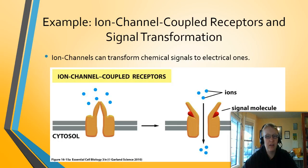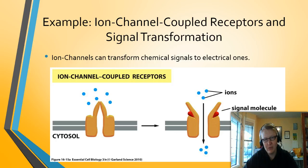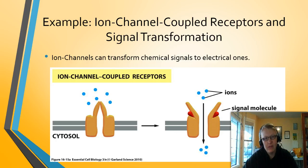To wrap up topic 1: ion channels can change electrochemical gradients within the cell by allowing ions to pass through. When used in conjunction with signals, we're transforming a chemical signal into an electrical signal within the cell — we discussed how this works with nerve cells. It's important to understand how ion channels can transform chemical signals into electrical signals. This is the end of topic 1. If you have any questions please let me know, and when you're ready, move on to topic 2, which covers GPCRs.